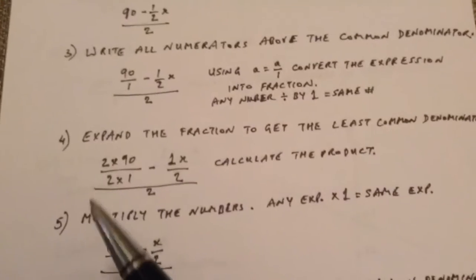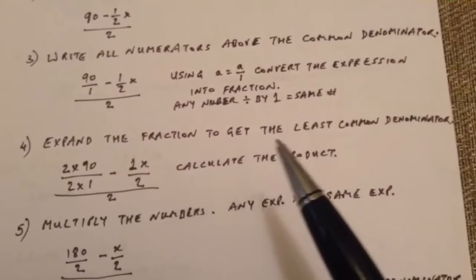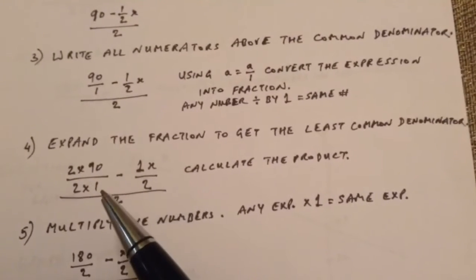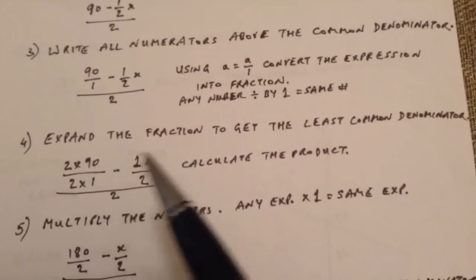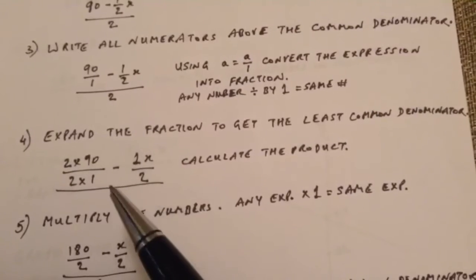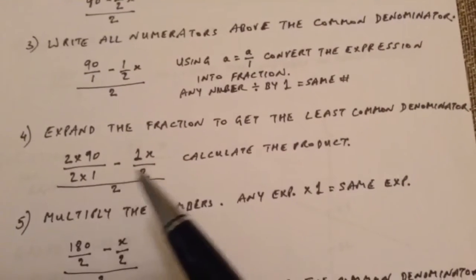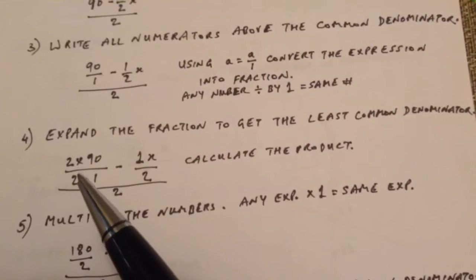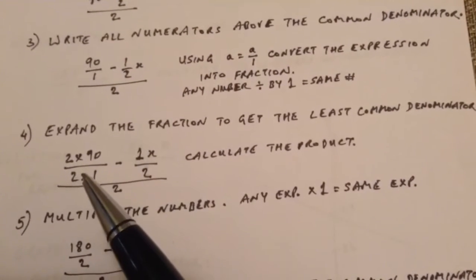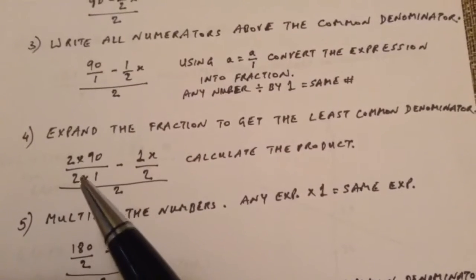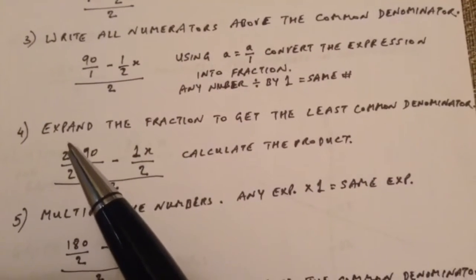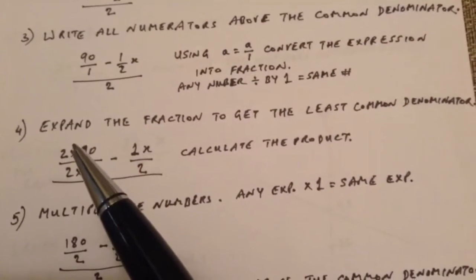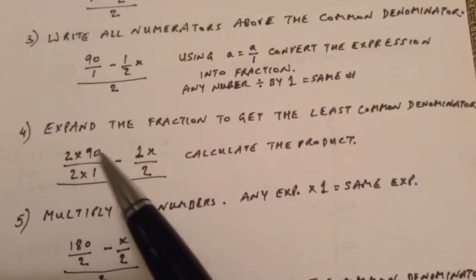And here what we do is we expand the fraction to get the least common denominator. Since we have 2 on this side but we have 1 on this side, in order to work on the numerators, we need to have the denominators as the same number. So in order to make this 1 as 2, we need to multiply this by 2. And if we multiply the denominator in this expression by 2, we also need to apply the same rule on the numerator. So we multiply by 2 on the numerator side and the denominator side in this expression.